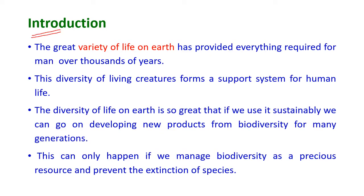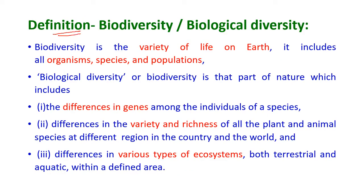Introduction: The great variety of life on earth has provided everything required for man over thousands of years. This diversity of living creatures forms a support system for human life. The diversity of life on earth is so great that if we use it sustainably, we can go on developing new products from biodiversity for many generations. This can happen only if we manage biodiversity as a precious resource and prevent the extinction of species.